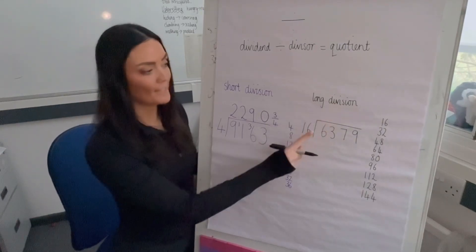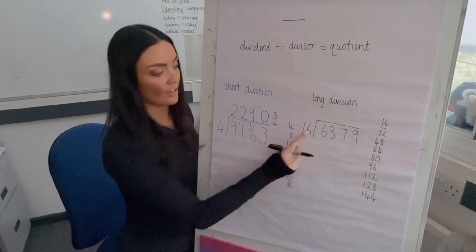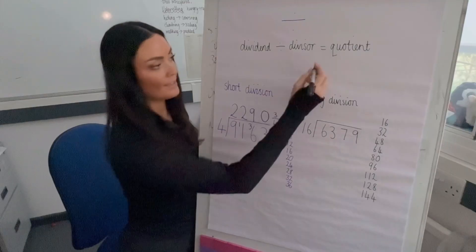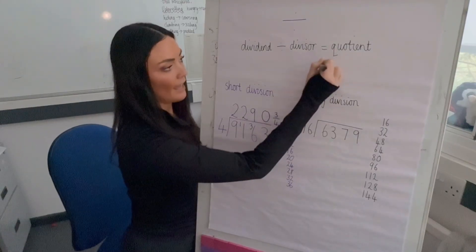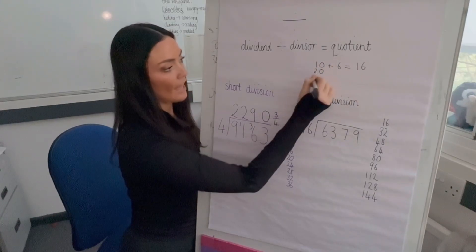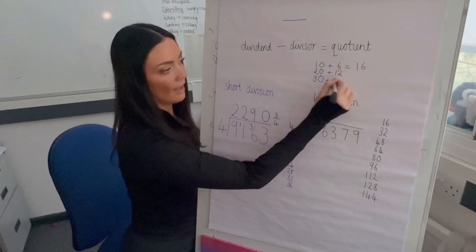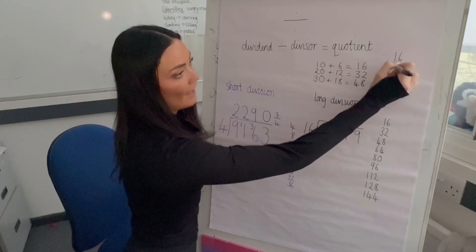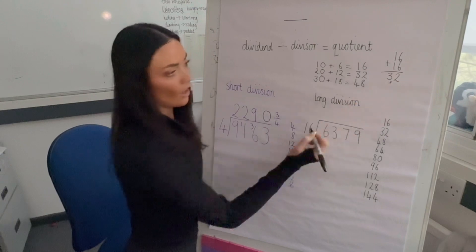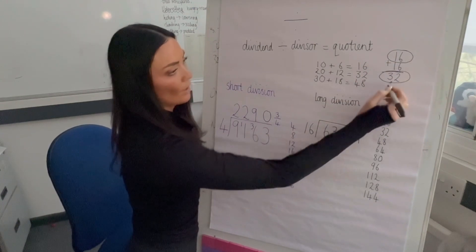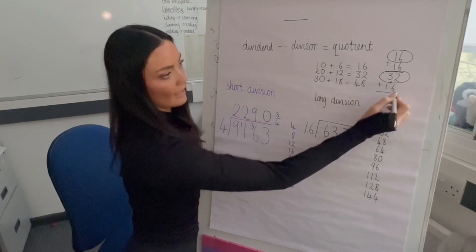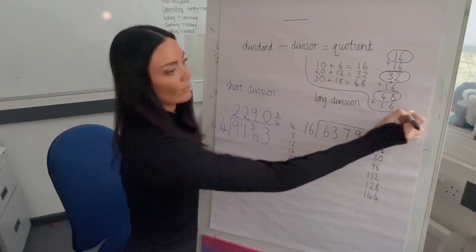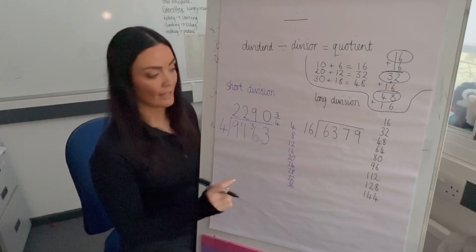Now we have long division: 6379 divided by 16. I've written out the multiples of 16 already. There are a couple of ways to find them: you can partition 16 into 10 + 6 and add them together, or use repeated addition — start with 16 and keep adding 16. I find it handy to circle each multiple as I go so I don't lose count.